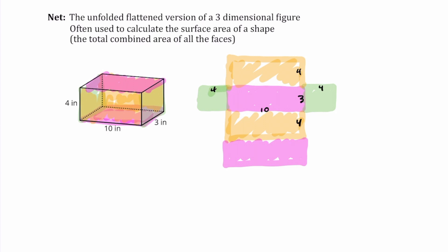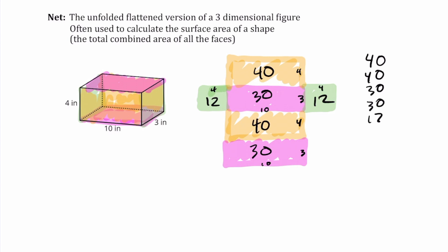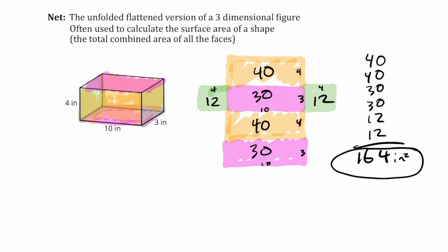To find the surface area, we calculate the dimensions of each piece and add them together. The bottom part is a 10 by 3, giving us 30. The orange pieces are 4 by 10, so they are both equal to 40. The green pieces on the side are 4 by 3 rectangles, so those equal 12. Adding all together with two of each piece: 30 plus 30, plus 40 plus 40, plus 12 plus 12 gives us 164 square inches as our surface area.